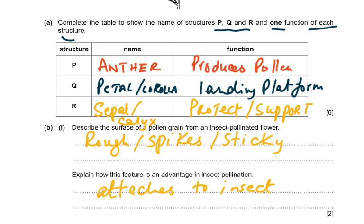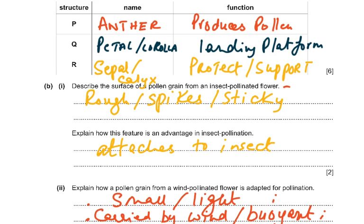Then describe the surface of the pollen grain from an insect-pollinated flower. It's rough, spiky, or sticky — because it sticks to the hairy body of the insect. Please don't say furry body of the insect; insects do not have fur. And explain how this feature is an advantage to insect pollination: naturally, because it attaches to the insect. There are two marks for this whole question.